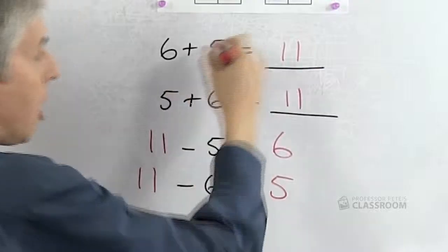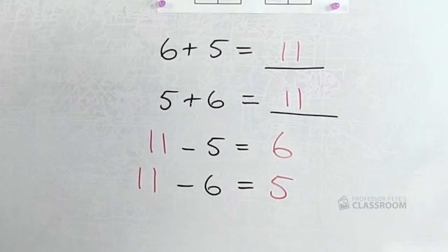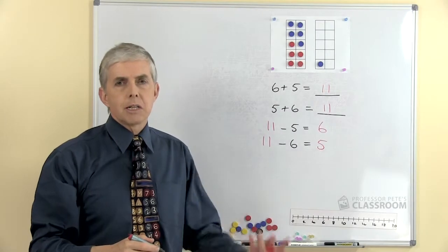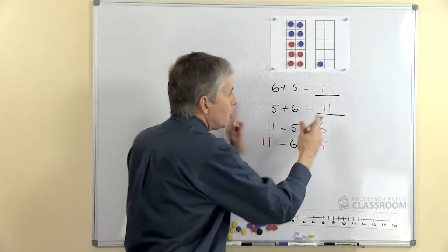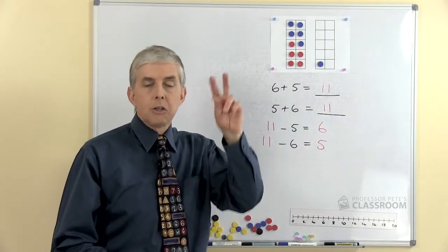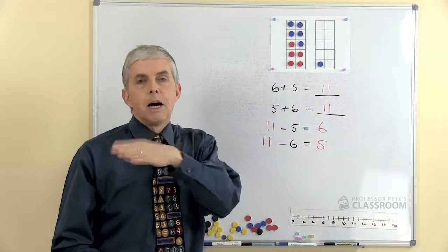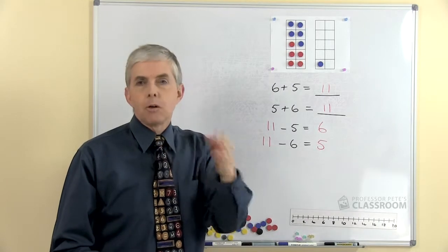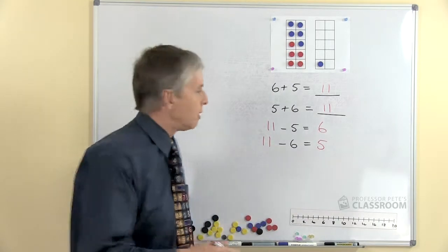And lo and behold, all four number facts use the same triad of numbers: the 5, the 6, and the 11. And that's true of every addition fact apart from the doubles, in which case you just have two related facts like 4 plus 4 is 8, 8 take away 4 is 4, and there's no turnarounds for that one of course.